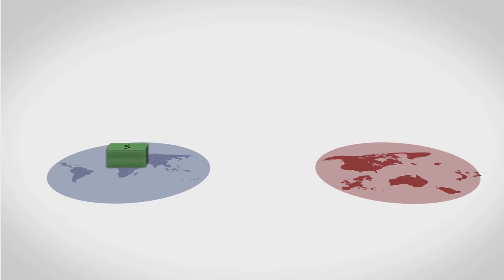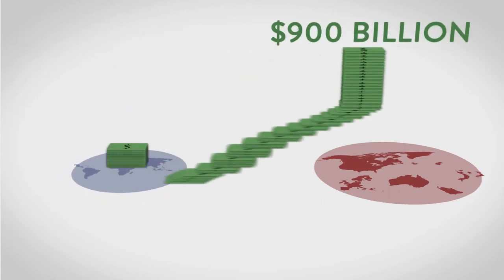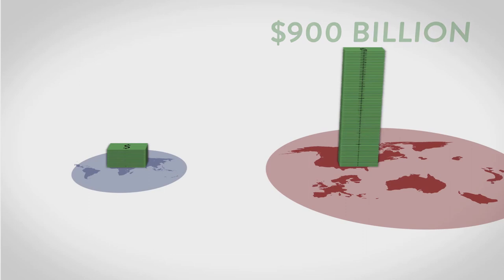One reason I've found is that large corporations are taking more than $900 billion out of poor countries each year through a form of tax avoidance called trade mispricing.